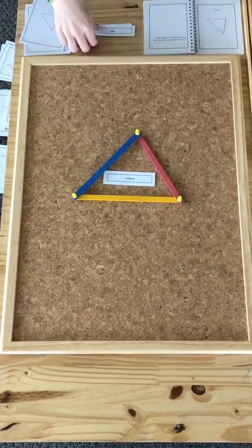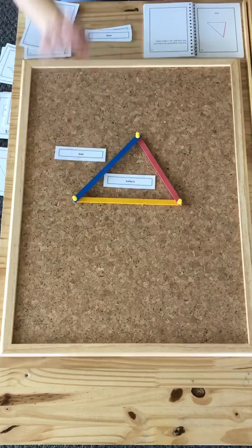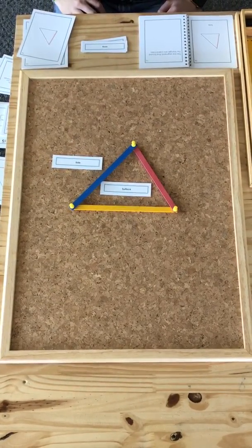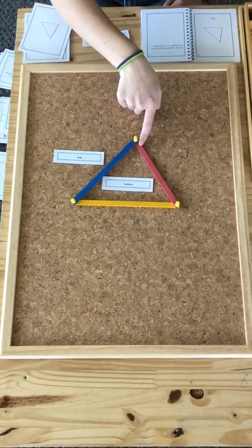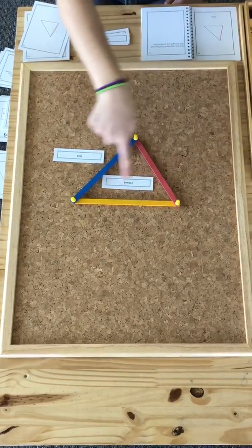The next part are the sides. The line segments that bound the triangle are called the sides. So a triangle has three sides.